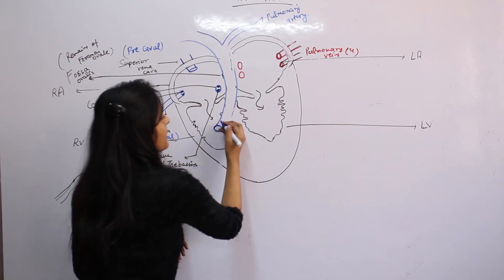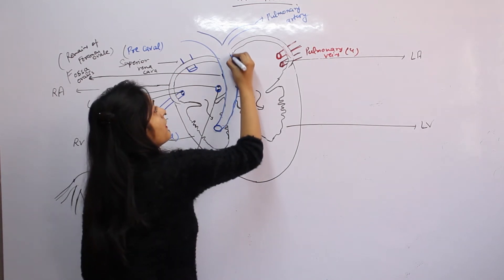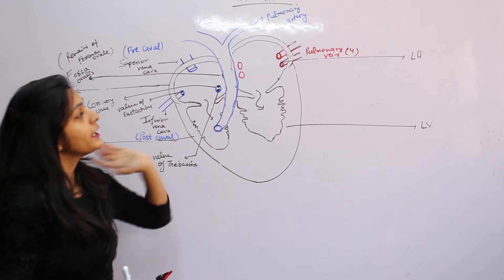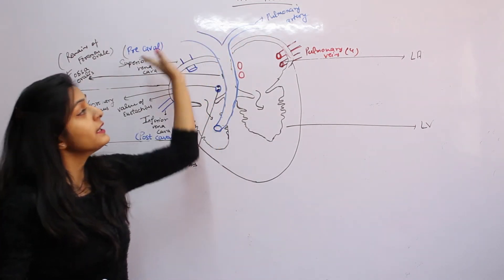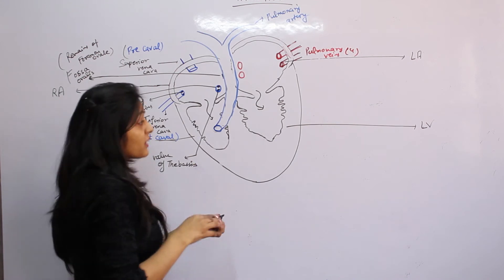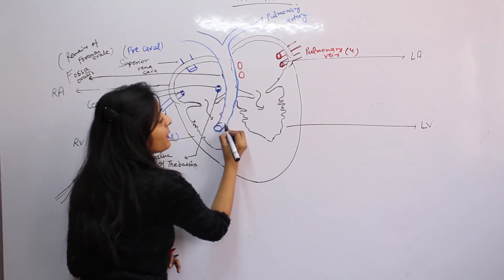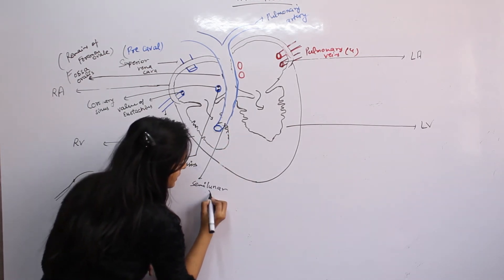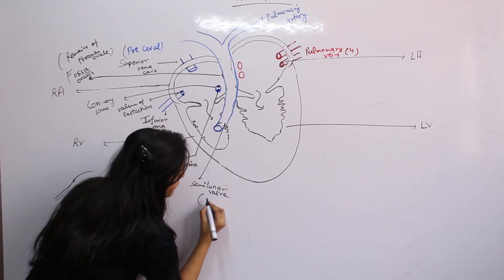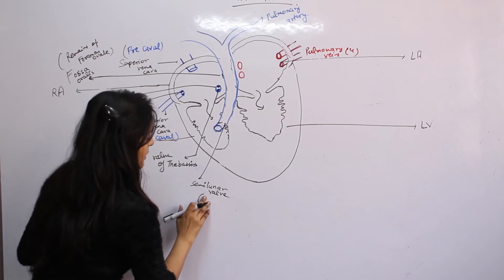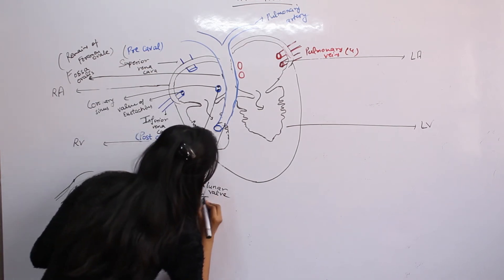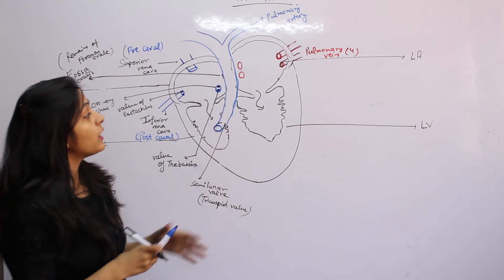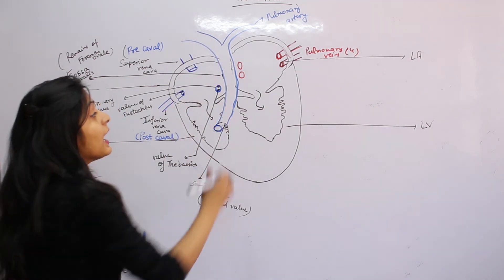This is our pulmonary artery leading to the lungs for oxygenation. Obviously, we have two lungs: the left lung and the right lung. It also contains a valve to prevent backward flow. Here it is called the semilunar valve, which is a tricuspid valve with three cusps. This semilunar valve takes blood to the lungs.